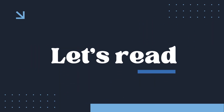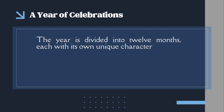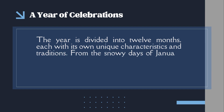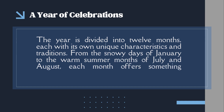Let's read. The year is divided into twelve months, each with its own unique characteristics and traditions. From the snowy days of January to the warm summer months of July and August, each month offers something special.